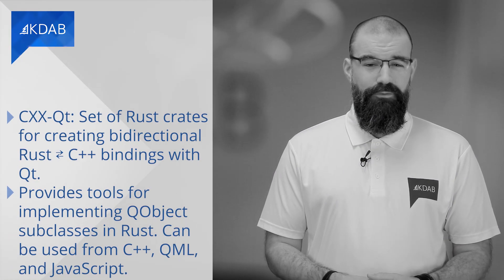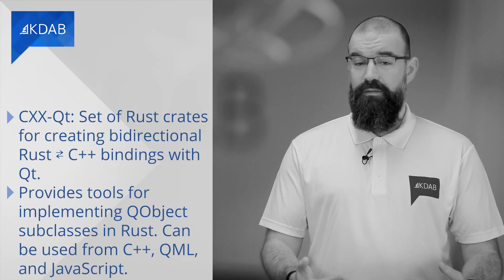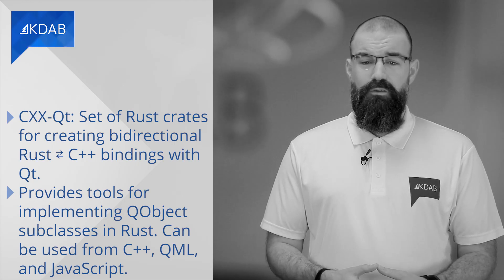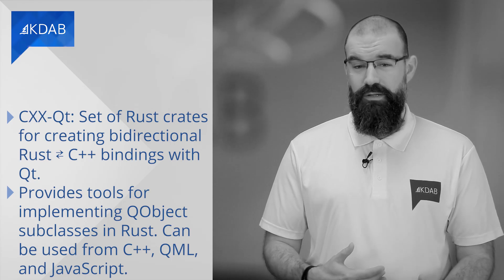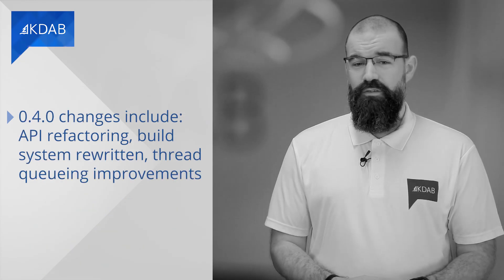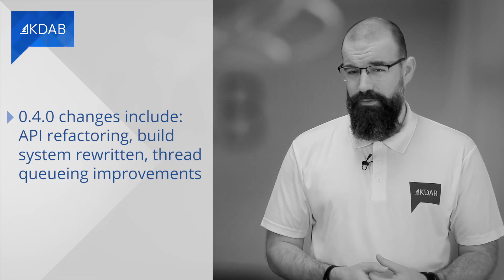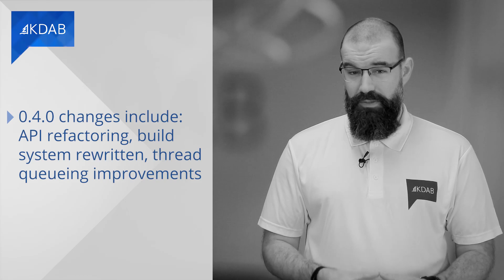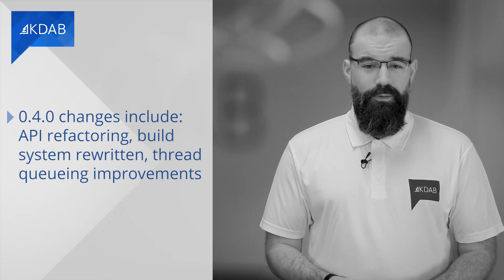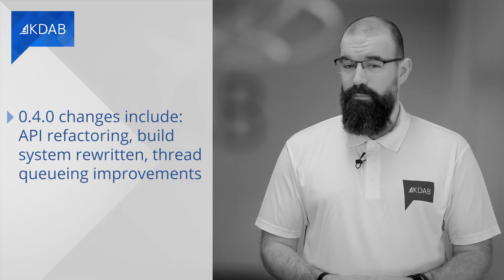CXX Qt is a set of Rust crates for creating bi-directional Rust/C++ bindings with Qt. It can be used to integrate Rust into C++ applications using CMake, or used to build Rust applications with Cargo. CXX Qt provides tools for implementing QObject subclasses in Rust, which can be used from C++, QML, and JavaScript. For version 0.4, the main changes are that the API has been refactored so that CXX Qt is a superset of CXX, allowing for custom types. The build system has been rewritten to simplify CMake builds and allow cargo-only builds. Thread queuing has been improved to allow closures. Find out more in the blog post or on GitHub, both linked in the description.